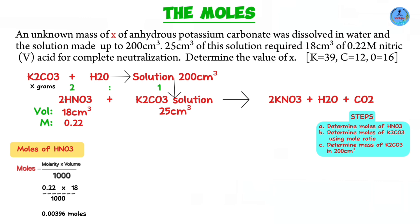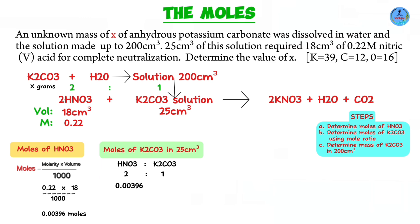Next step: determining the moles of potassium carbonate using the mole ratio. The mole ratio is 2 to 1 — two moles of nitric acid react with one mole of potassium carbonate. If the actual moles of nitric acid are 0.00396, cross multiplying gives us 0.00198 moles of potassium carbonate present in 25 cubic centimeters.